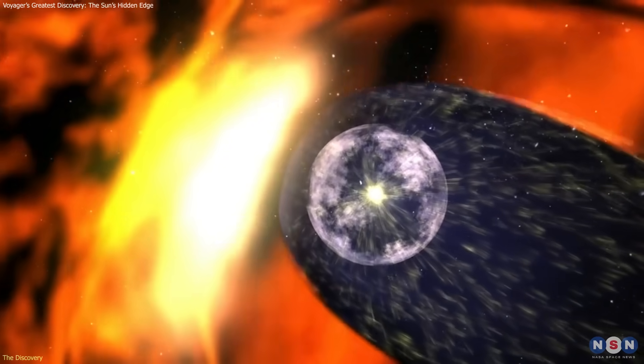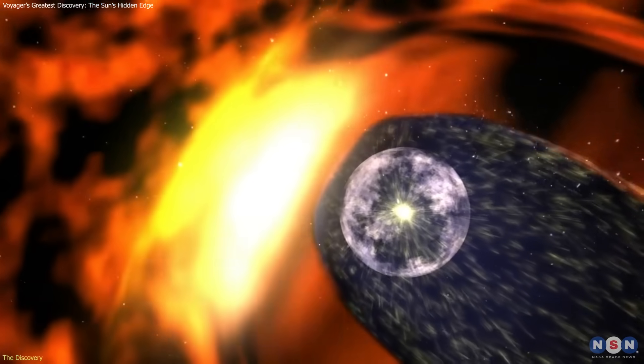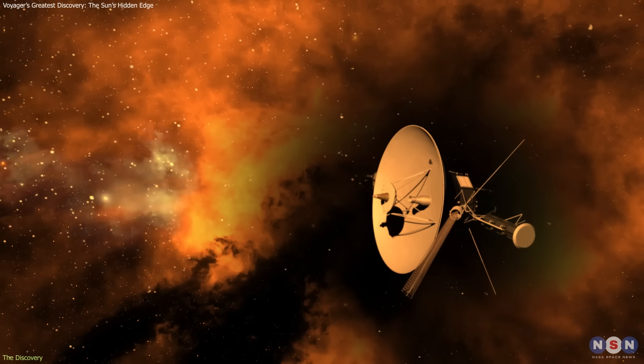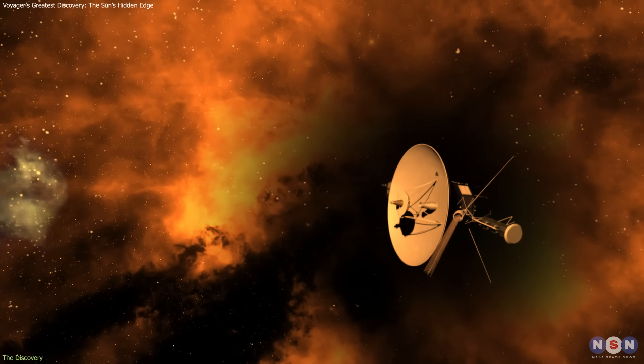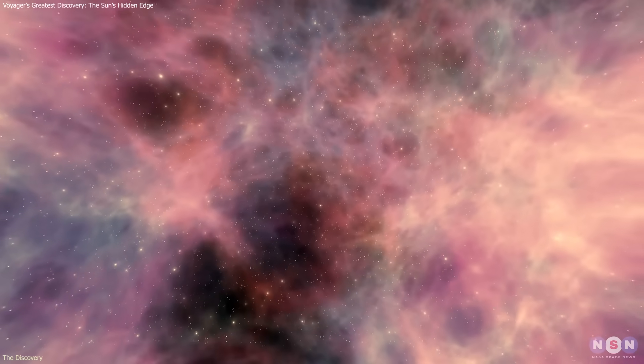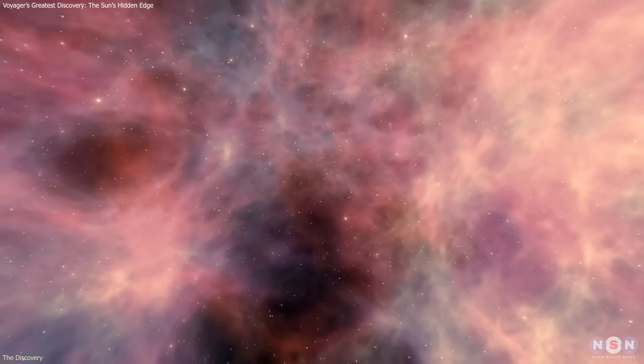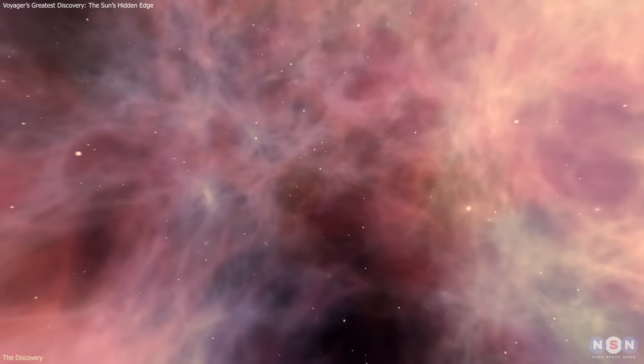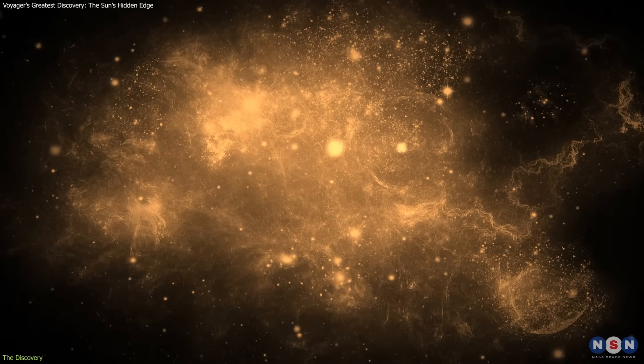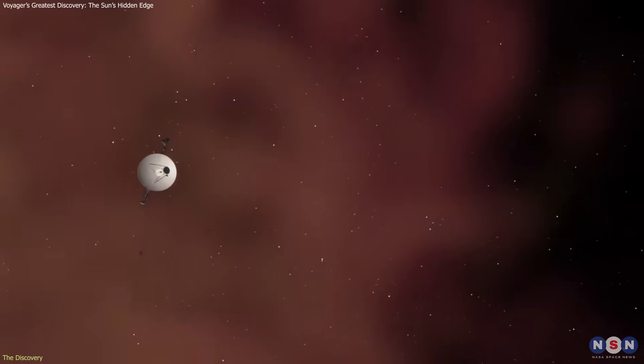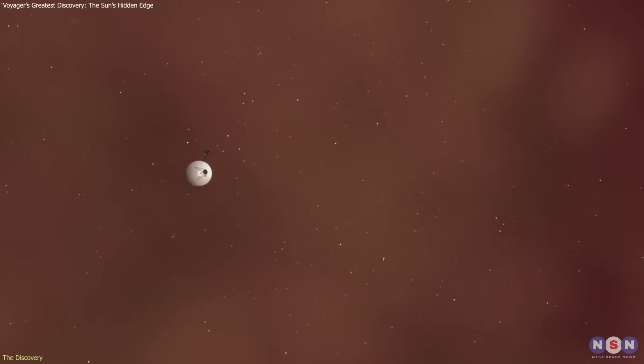The collision heats the particles to extreme energies, producing what scientists poetically call a wall of fire. Despite the intensity, the Voyagers were never in danger. The plasma there is incredibly sparse, fewer than one particle per cubic centimeter, meaning almost no heat transfer occurs.